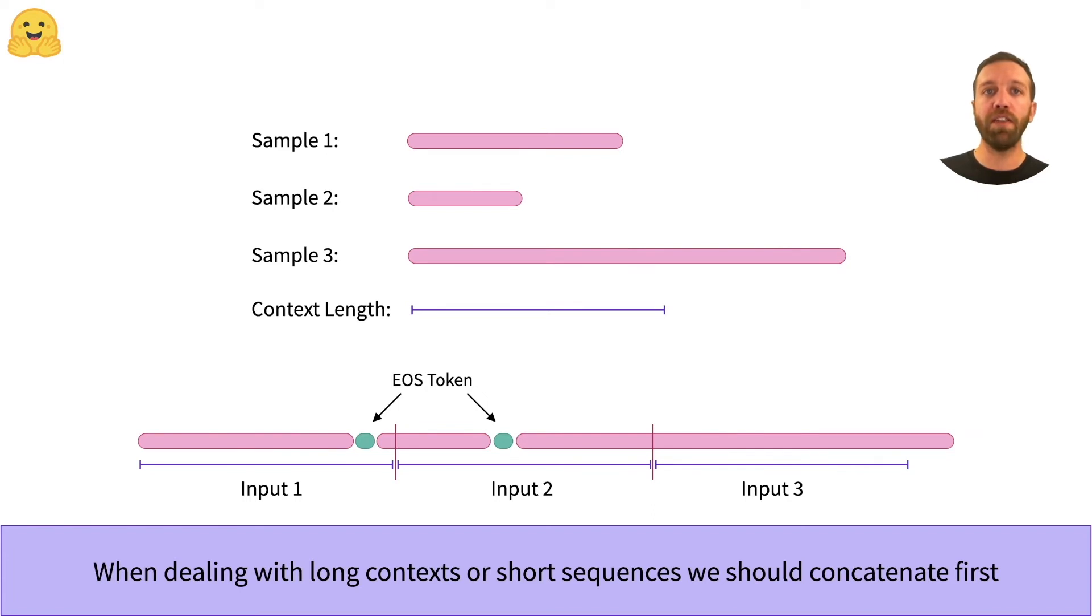In this case it is better to first tokenize each sample without truncation and then concatenate the tokenized samples with an end of string or EOS token in between. Finally we can chunk this long sequence with the context length and we don't lose too many sequences because they're too short anymore.